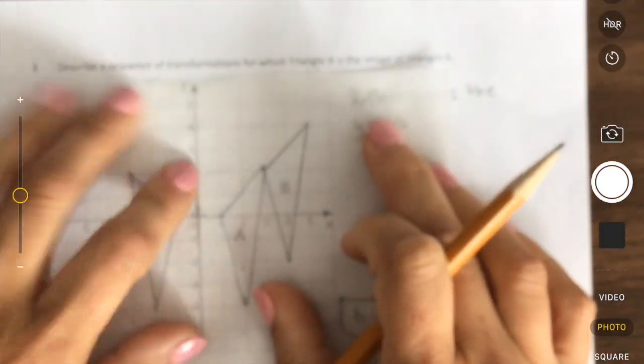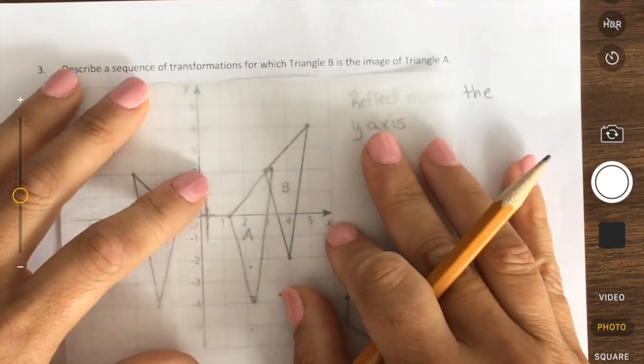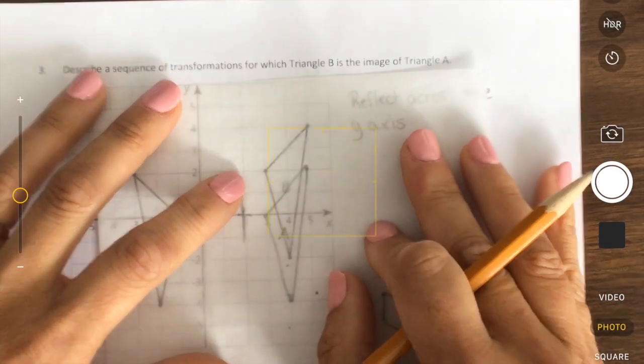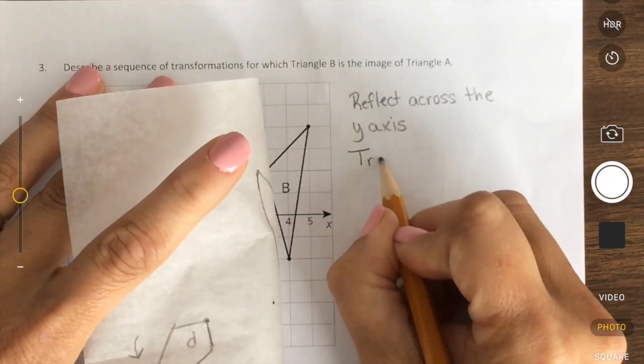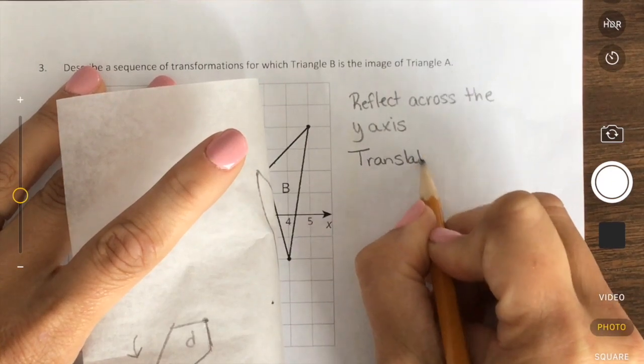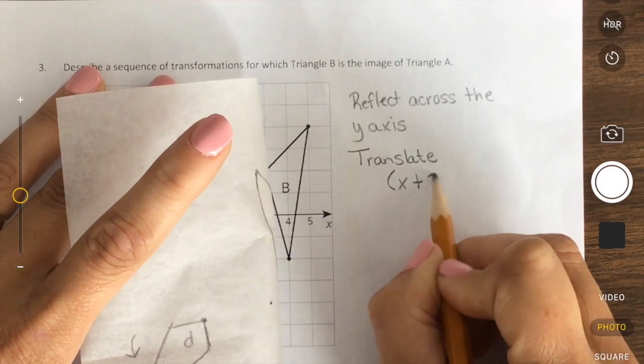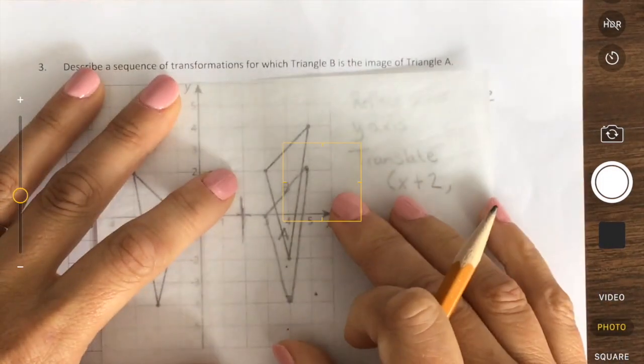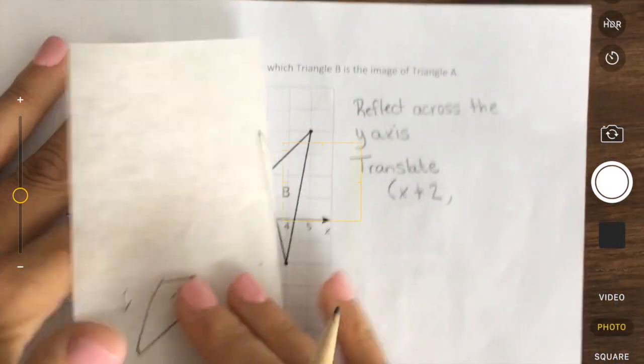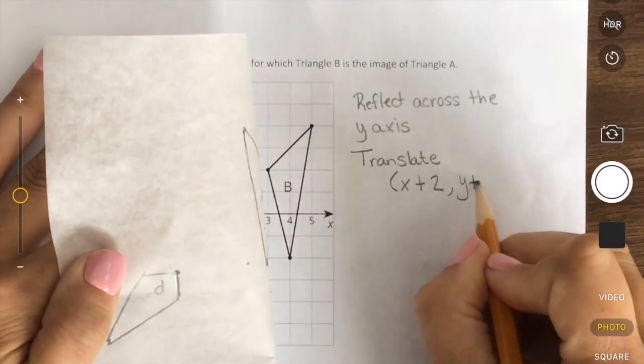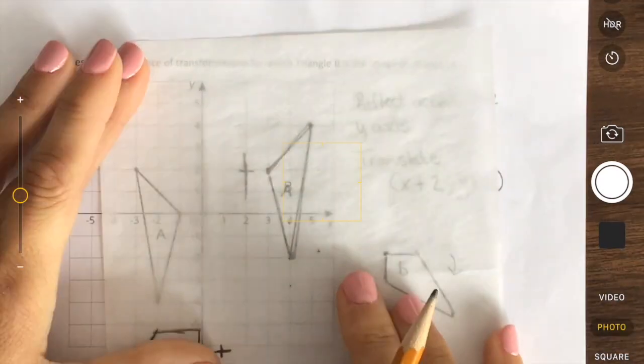So what I would say with this way is I reflected across the Y axis. Then from there, maybe I do a translation. I'm going to go over one, two. Well, I know that's translating, and I'm going to do an algebraic. I did X plus two, and then I'm going to go up. One, two, Y plus two. And that could get me there.